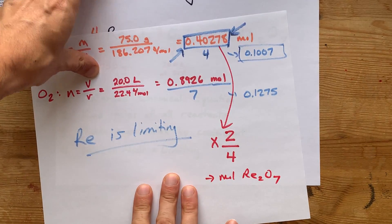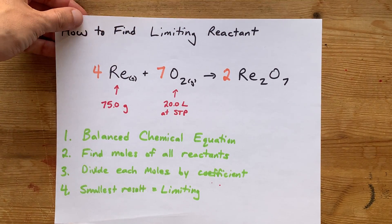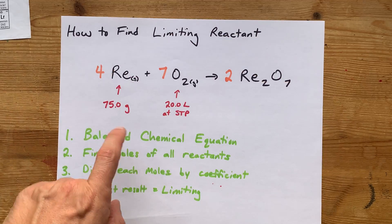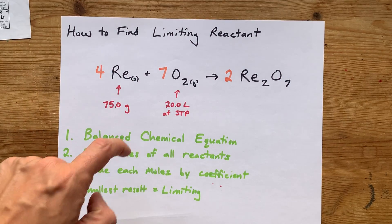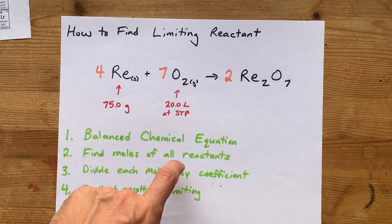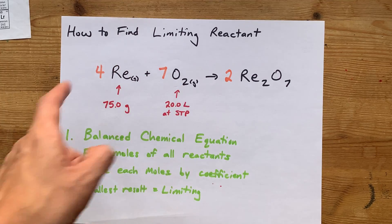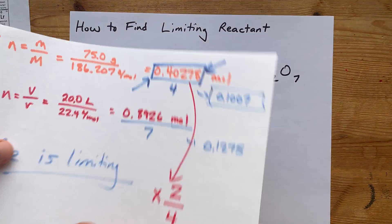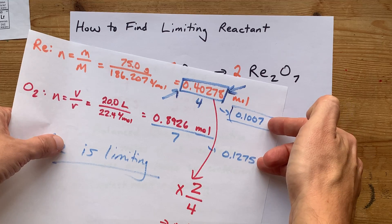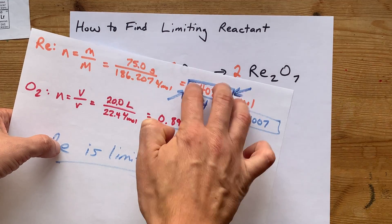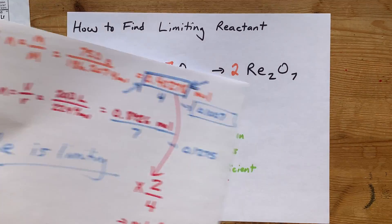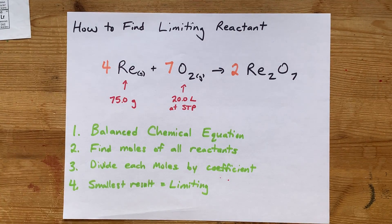This is what you came for—how to find it. Get the balanced chemical reaction. Get everything in moles. Divide each of the moles by the coefficients from the balanced chemical reaction, and whichever of those results is smallest corresponds to the limiting reactant. Thanks for being with me, and best of luck.